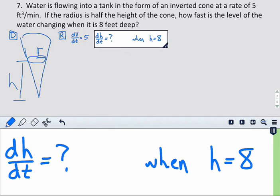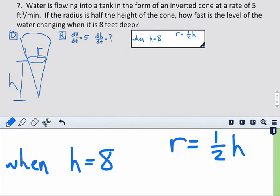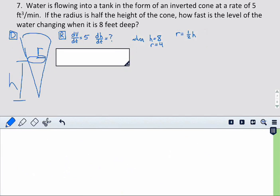Now, we also know that the radius is half the height of the cone. So, in this case, if the height is eight, the radius is gonna be half of that, which will be four. So, let's go ahead and find our equation.